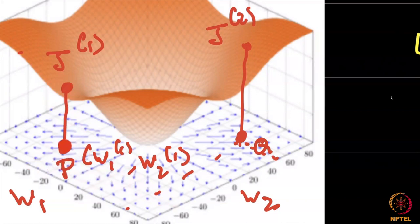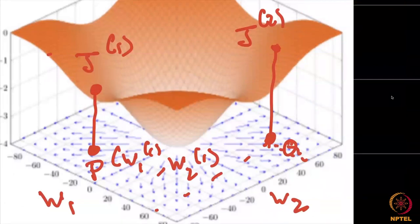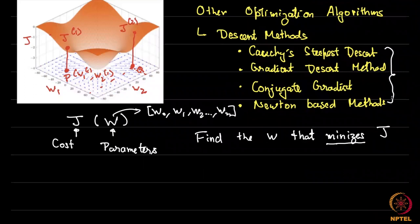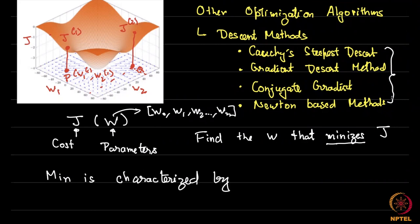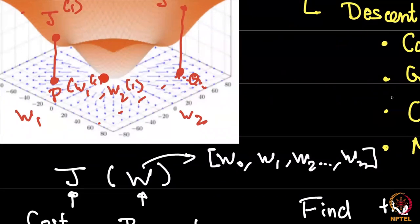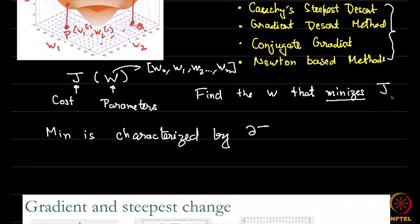Given w1 equals, say, minus 40 and w2 equals minus 60, you compute J and it will say, okay, it is minus 2. The final goal is to reach a place which is the bottom, characterized by the minimum. At the minimum, wherever you look around, it is flat — any direction you move, you will always move up. That is the intuition behind saying del J / del w1 = 0 and del J / del w2 = 0.